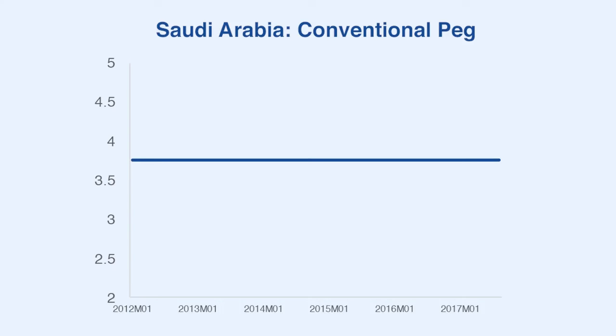Saudi Arabia is de facto classified as conventional peg. The currency of Saudi Arabia, the riyal, has been pegged to the United States dollar since 1986.